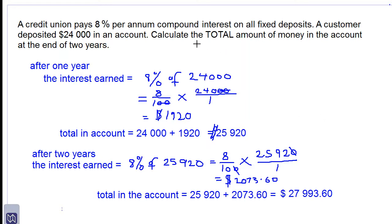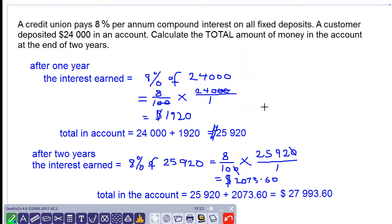So the total amount of money in the account at the end of two years is $27,993.60. Thanks for watching and all the best in your studies.